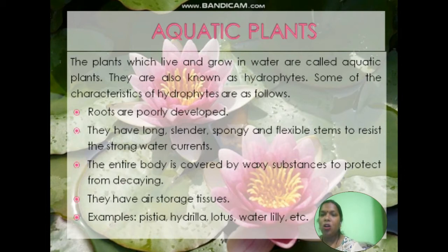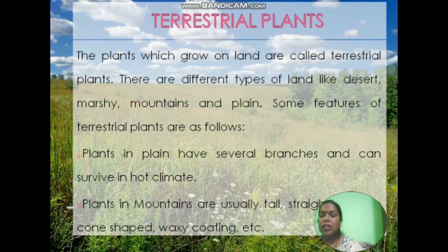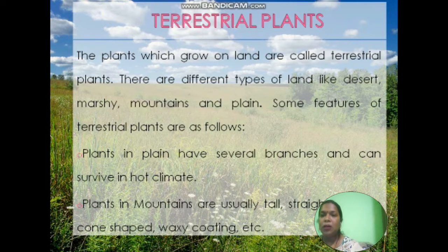Terrestrial plants are plants which grow on land. There are different types of land such as desert, marshy, mountains, and plains. Some features of terrestrial plants are as follows: plants in plains have several branches and can survive in hot climates.